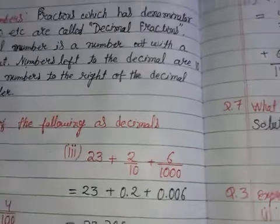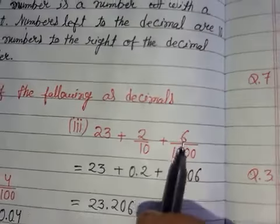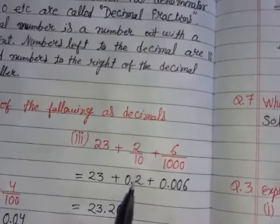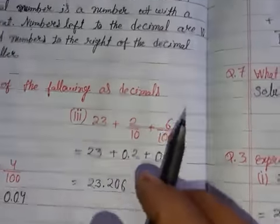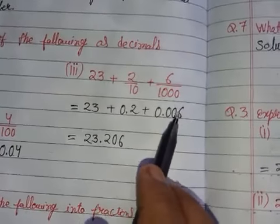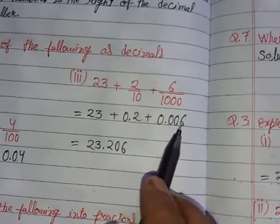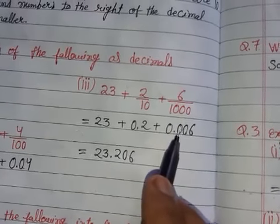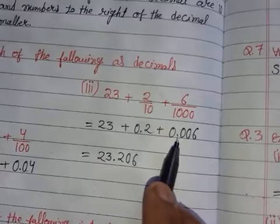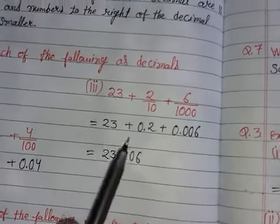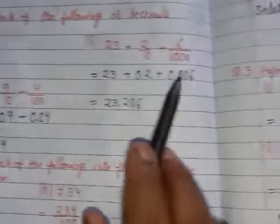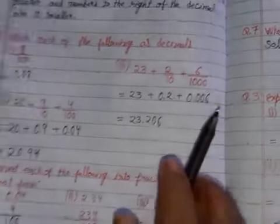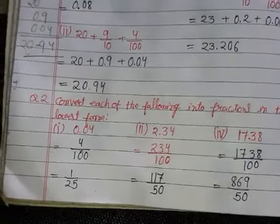The third question: 23 plus 2/10 plus 6/1000. For 2/10, there is one zero so we place the decimal after one digit — giving 0.2. For 6/1000, there are three zeros so we place the decimal after three digits — since there is only one digit, we add two extra zeros, giving 0.006. Adding all together, we get 23.206.